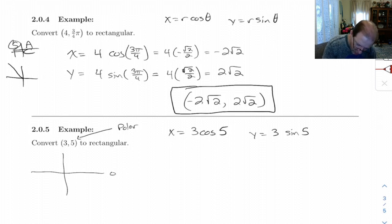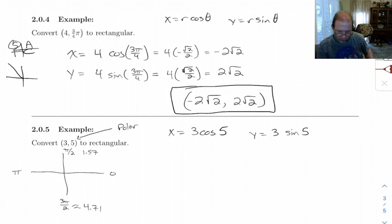This is pi over 2, which is like 1.57. This is pi, which we know is 3.14. 3 pi over 2 is down here. And 3 pi over 2 is 4.71, I think. So this is going to be somewhere in quadrant 4.